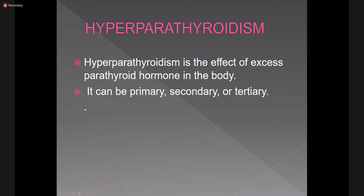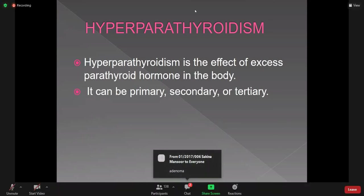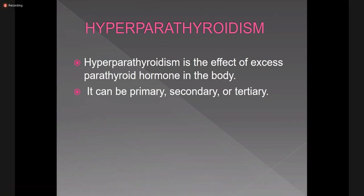Coming to hyperparathyroidism, which is the effect of excess parathyroid hormone in the body. It may be primary, secondary, or tertiary. The cause of primary hyperparathyroidism is parathyroid adenoma — very good — also parathyroid carcinoma and parathyroid hyperplasia. All these causes involve excess secretion from the parathyroid.